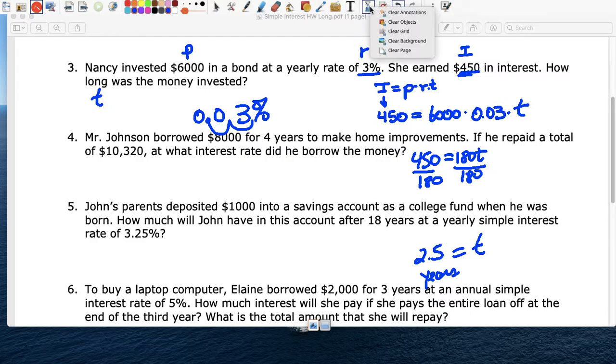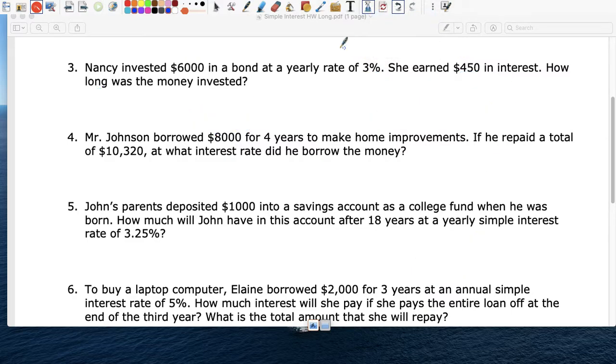Number four. Mr. Johnson borrowed $8,000. He borrowed $8,000 for four years. He paid $10,320. So what was the interest rate that they charged? What percent did they charge him? So here's my P. Here's my T.